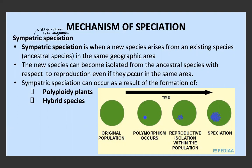The new species can become isolated from the ancestral species with respect to reproduction — they become reproductively isolated as opposed to geographically isolated, even if they occur in the same area. For allopatric speciation, the two populations will first be geographically isolated and then over time become reproductively isolated. In sympatric speciation, they are only reproductively isolated.